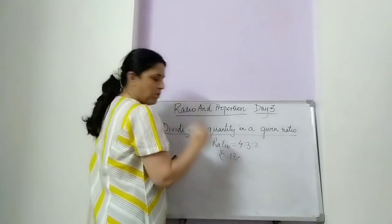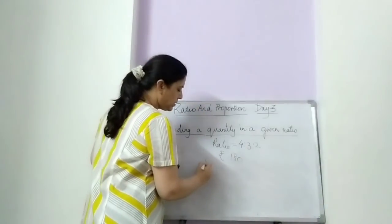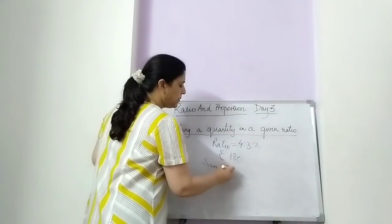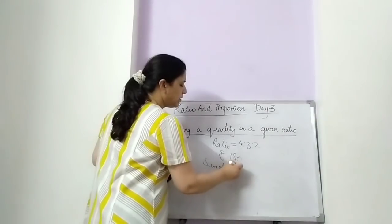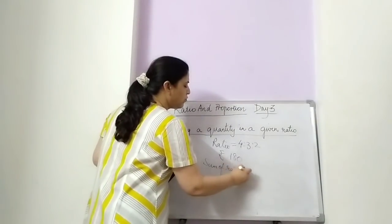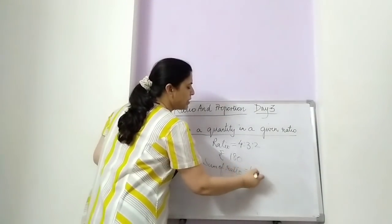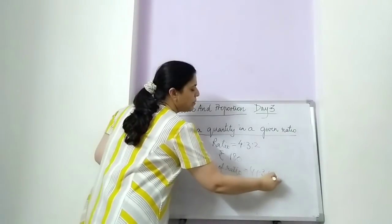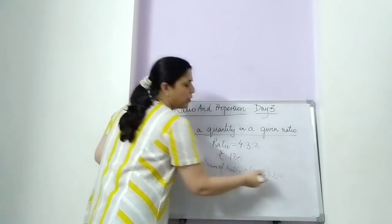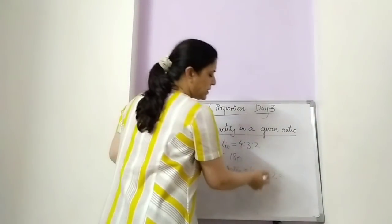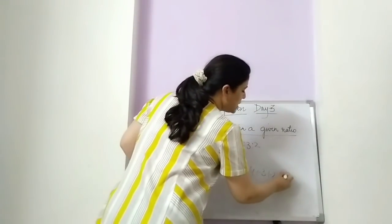The quantity 180 is to be divided in this ratio, so we find the sum of ratio first. Sum of ratio is 4 plus 3 plus 2. 4 plus 3 is 7, plus 2 is 9.